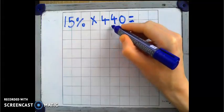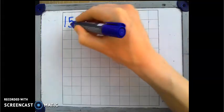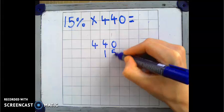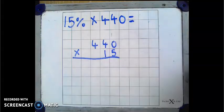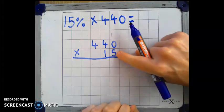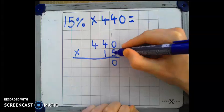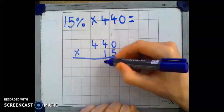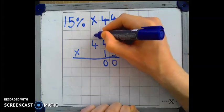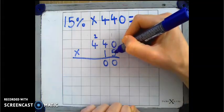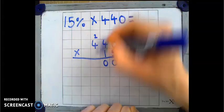We're multiplying the whole number by the percentage number. Starting with the 1s. 5 times 0 is 0. 5 times 4 is 20. I can put the 0 in here, and then I'll put the little 2 up here, and remember to add it on in a moment. 5 times 4, 20. Plus the 2, 22.